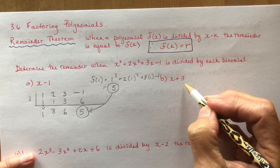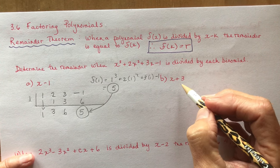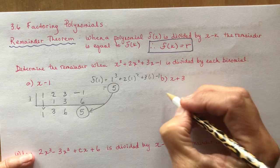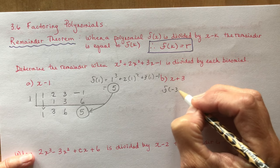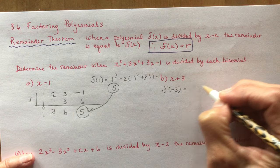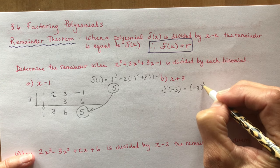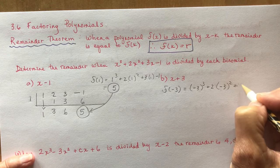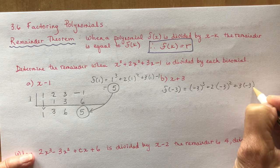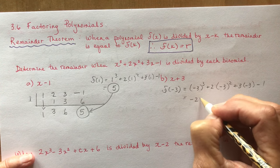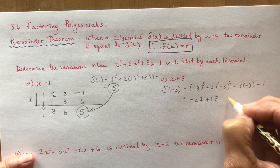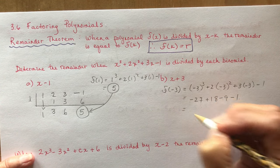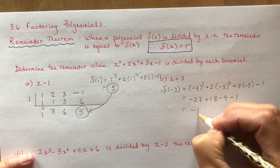So let's do this one without doing the synthetic division — we're just going to plug it in. If we're dividing by x plus 3, then f at minus 3 is going to be the remainder. So I'm just going to plug in minus 3 into my equation: minus 3 cubed plus 3 times minus 3 minus 1, and that would be minus 27 and 18 minus 9 minus 1.